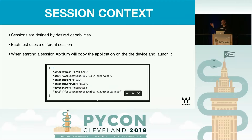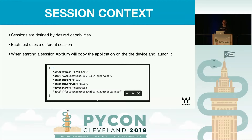So in order to connect from Appium to the device, we need to create a session. A session is defined by desired capabilities, and basically it's our connection to Appium. Desired capabilities are a set of keys and values that tell Appium what kind of automation session is required. You can set up things like language, locale, new command timeout, and even browser name. For this demonstration, I've set our orientation to landscape. I gave Appium the path to our app, so it will know where to get it from and how to copy it to the device.